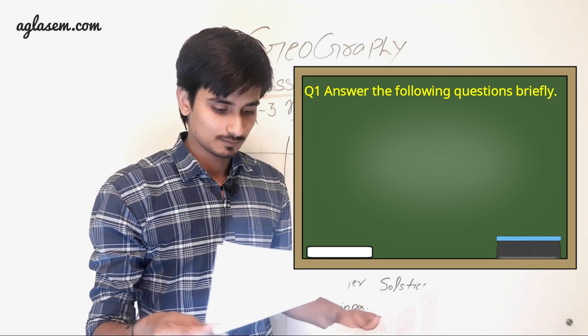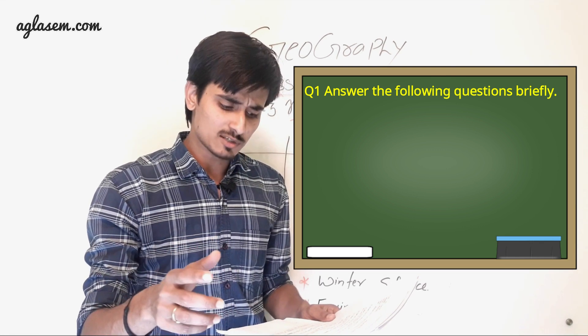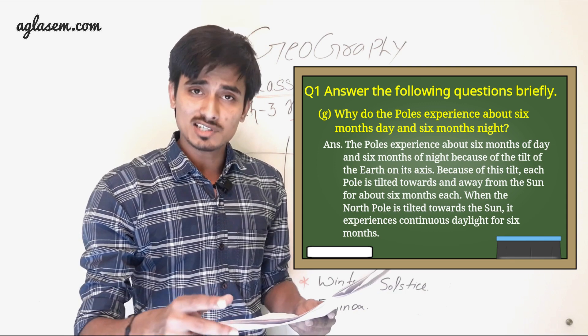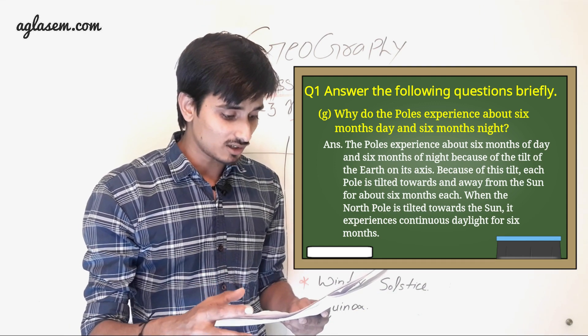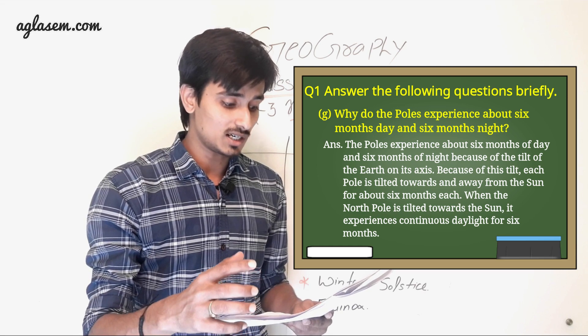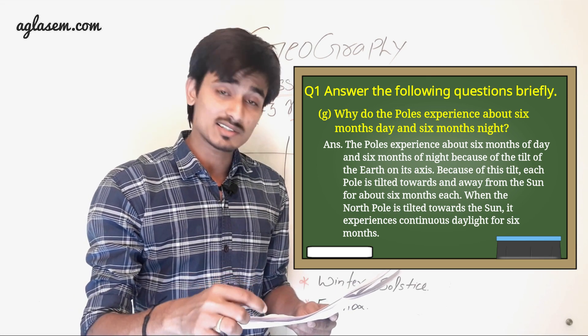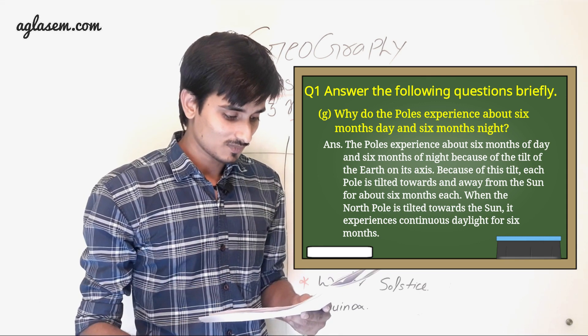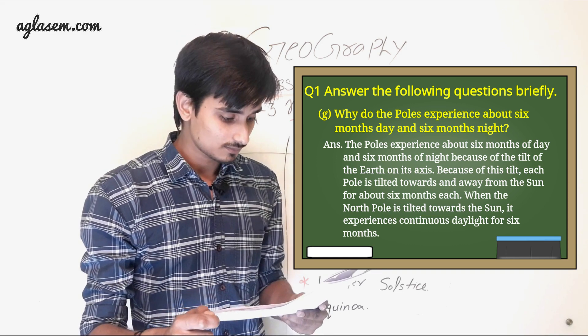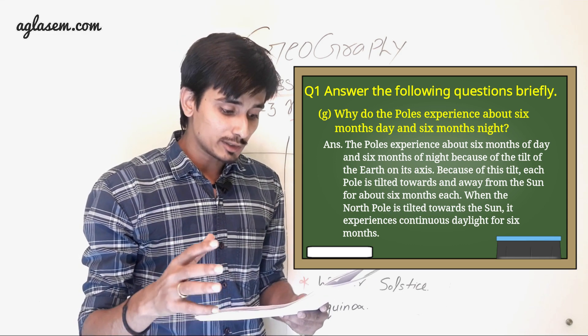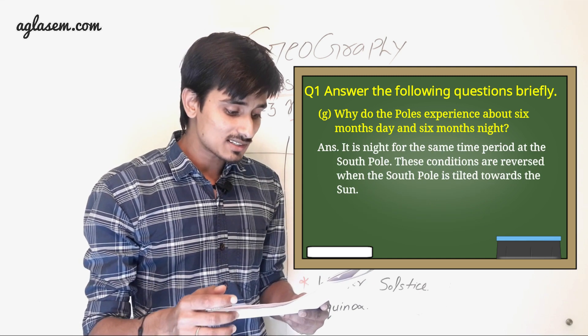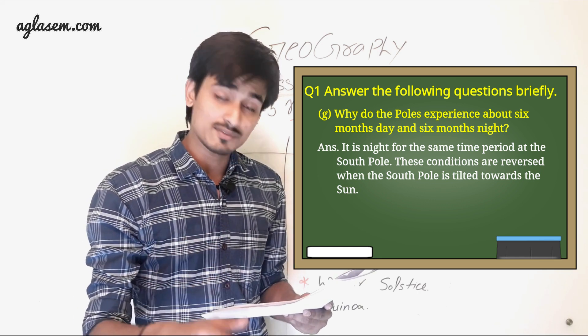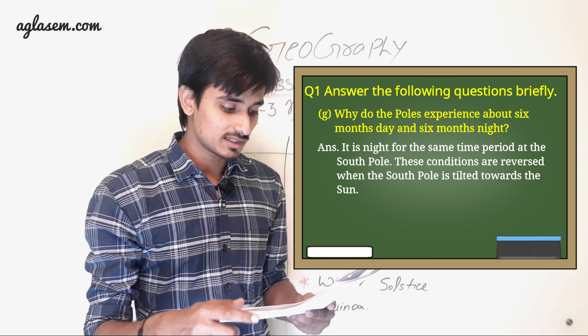G. Why do the poles experience about 6 months day and 6 months night? So answer is: The poles experience about 6 months of day and 6 months of night because of tilt of the Earth on its axis. Because of this tilt, each pole is tilted towards and away from the Sun about 6 months each. When the North Pole is tilted towards the Sun, it experiences continuous daylight for 6 months. It is night for the same time period at the South Pole. These conditions are reversed when the South Pole is tilted towards the Sun.